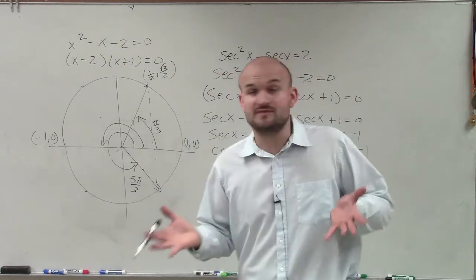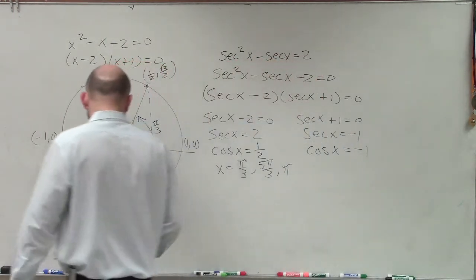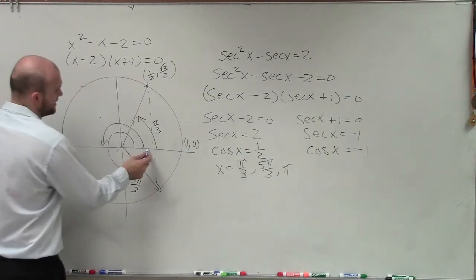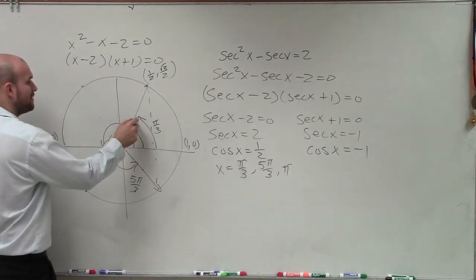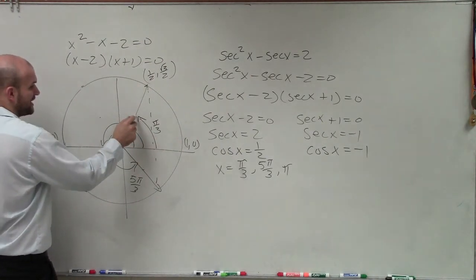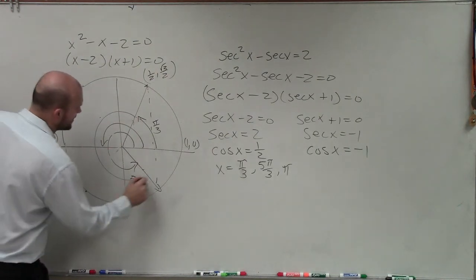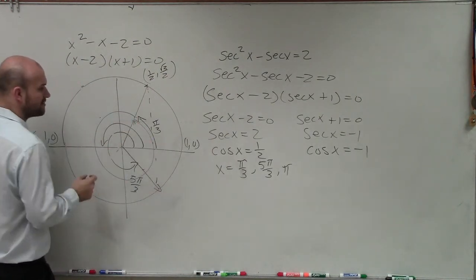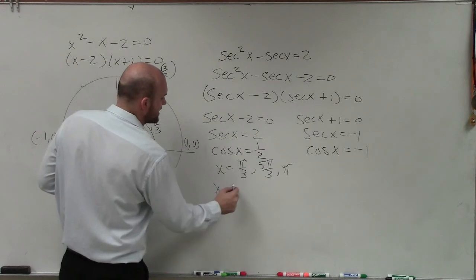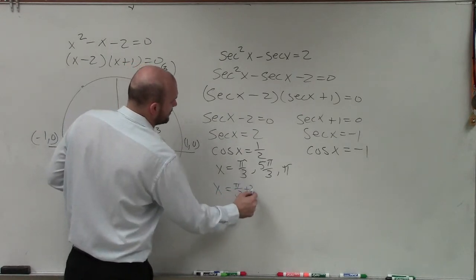But if I ask you to find all of the solutions, there's a couple things we need to look at with this. First of all, we see that here is our first solution. Well, if I want to get to the next solution that covers this, I'm going to have to go all the way around the circle back again. So I'm going to be adding 2 pi.